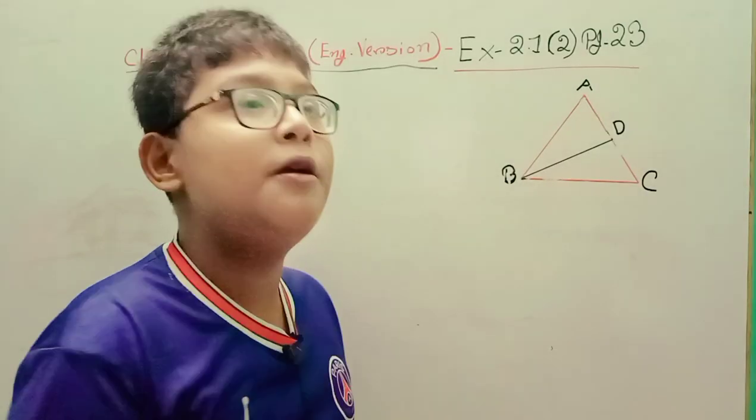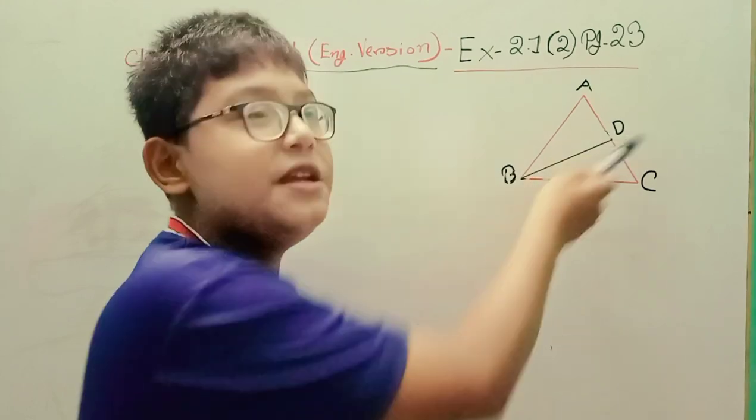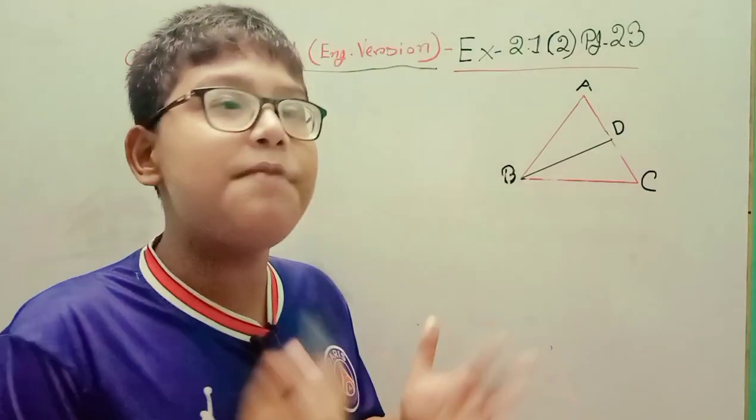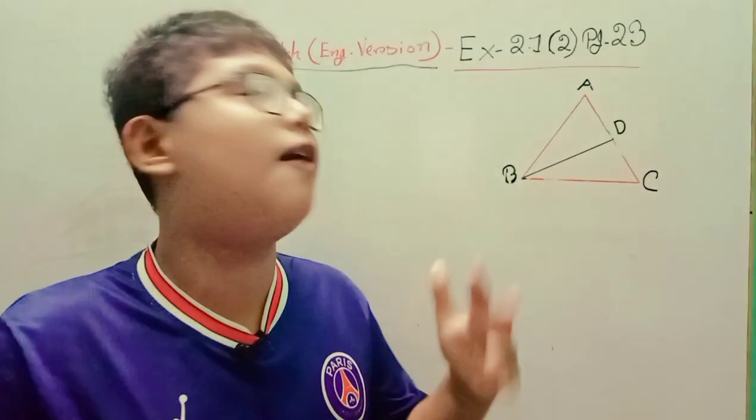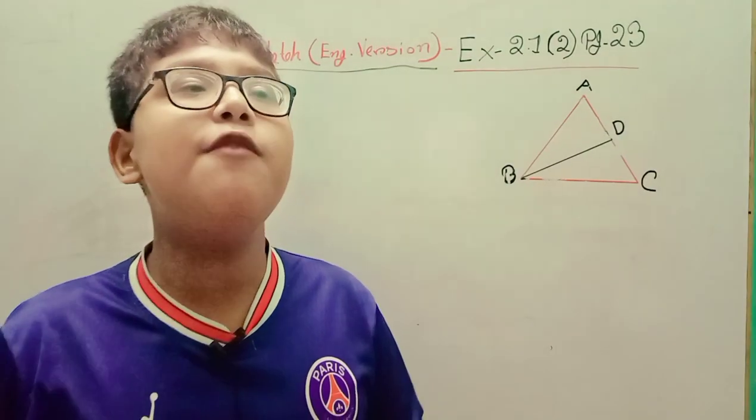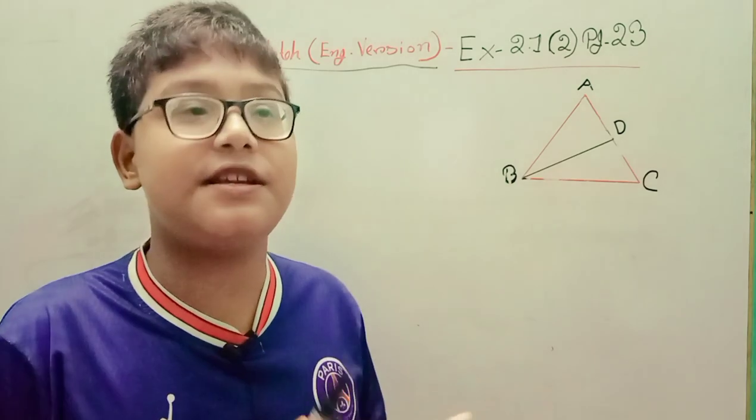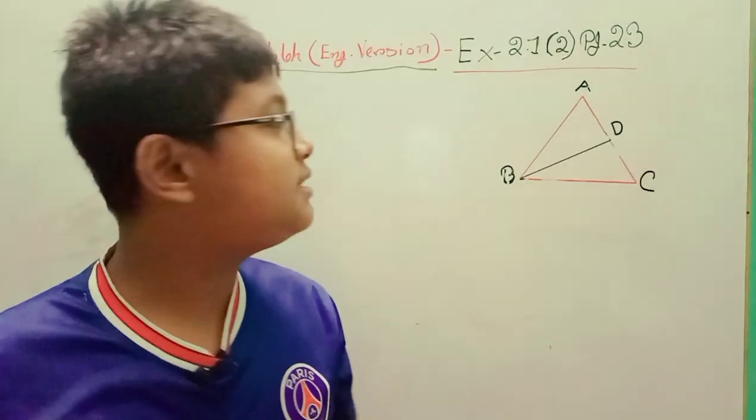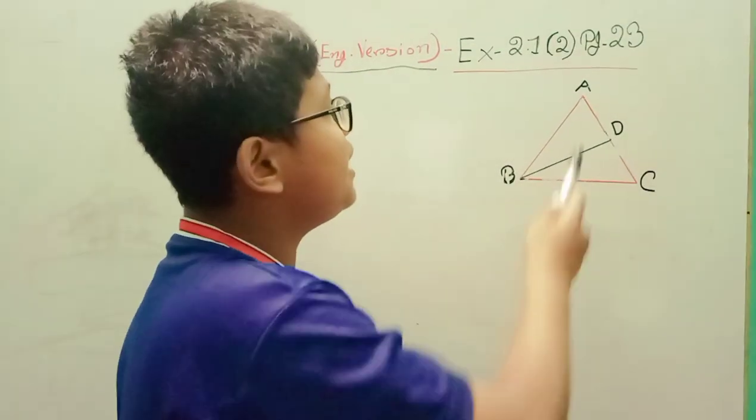BD is the median. The length of side BC is twice the length of AD. We need to determine what type of triangle it is. With logic, we can see BD is the median on AC.